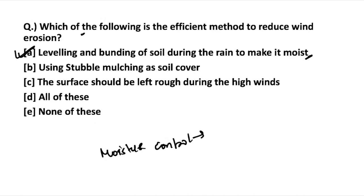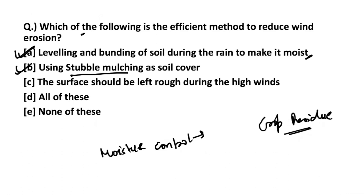The next option is using stubble mulching as soil cover. Stubble mulching involves using crop residue — after the crop has been harvested, the residue is left as a soil cover. When wind flows at high speed, the residue gets removed instead of the soil, reducing wind erosion. The third option is that the surface should be left rough during high winds — smooth lands are more prone to wind erosion, so surface roughness creates friction and reduces wind erosion. The answer is all of these.